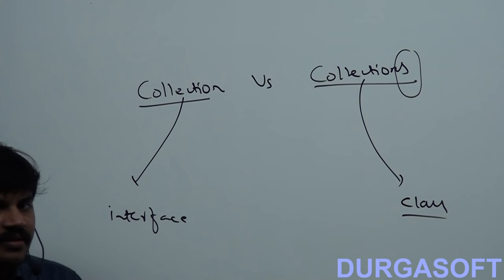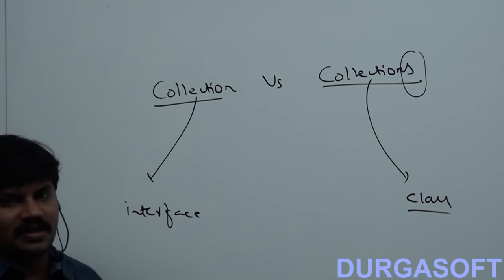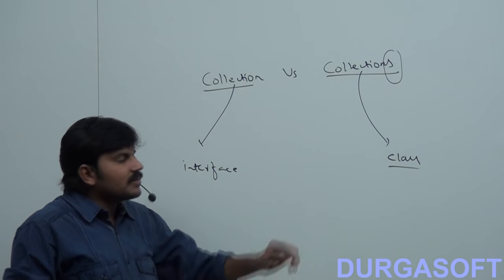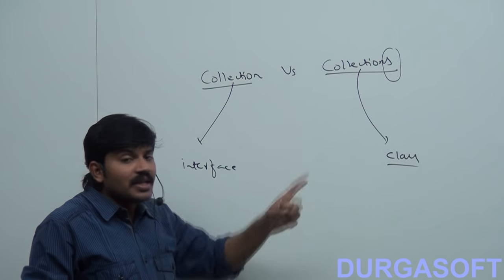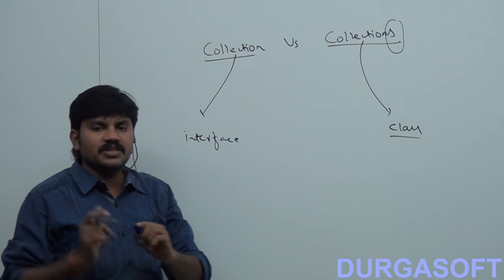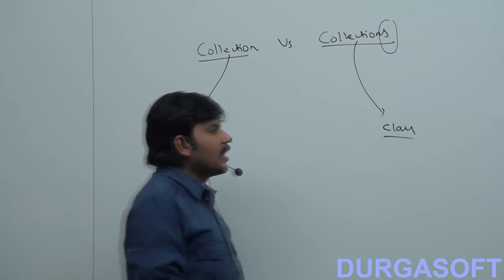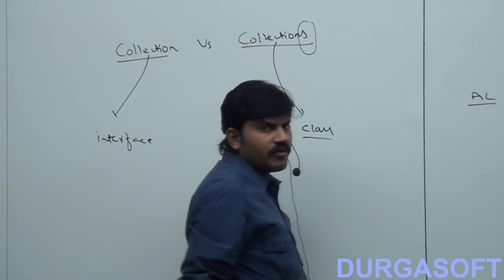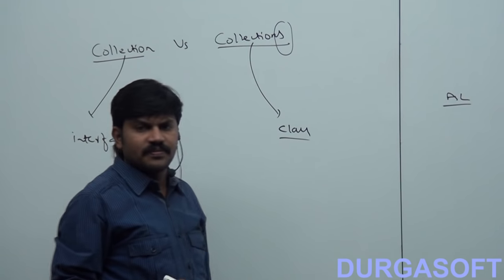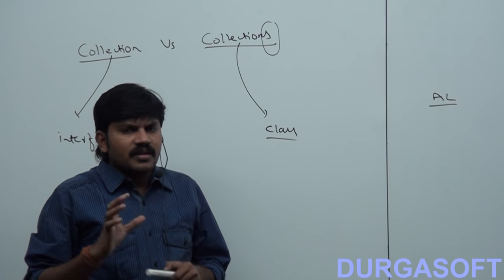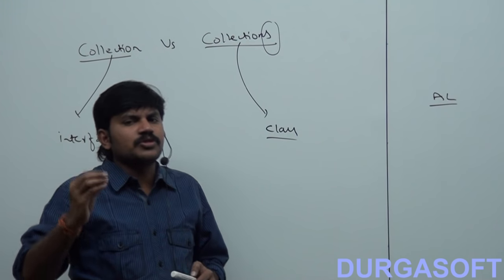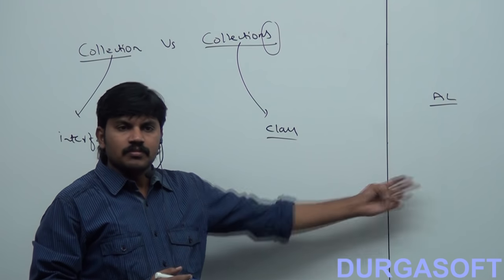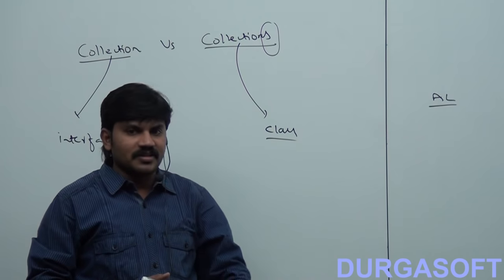Collections is a utility class which defines several utility methods for collection objects. For example, I have an ArrayList. An ArrayList never talks about sorting — it never talks about sorting. So if I want sorting for an ArrayList...